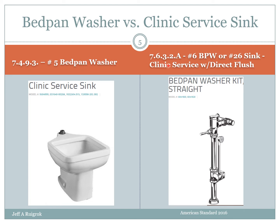The valve that would sit on top of this clinic service sink: if you turn to 7632A, which is the supply size tables, you'll see it under option number six — bedpan washer — but really number 26 — sink clinic service with direct flush valve, which is this valve here. Of course, manufacturers don't call it that; they refer to it as a bedpan washer kit. It's got a flush valve, plus a little wand that pulls down so water comes out for spraying — just like a hand spray, but a rigid one for spraying out the bedpan and giving it a good rinse. So that's one such combination: number five from 7493 and number 26 from 7632A.